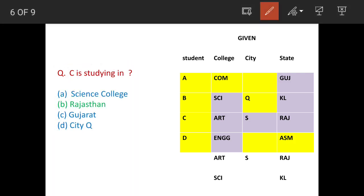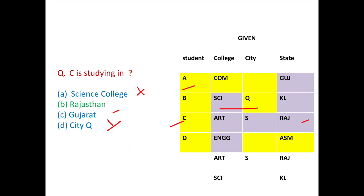C is studying in — C's state is Rajasthan, so option B is the answer. The other options don't fit: science college is not applicable, Gujarat is where A is studying, and city Q belongs to the science college.